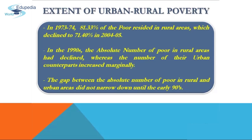Regarding the extent of urban and rural poverty: in 1973-74, 81.33 percent of the poor resided in rural areas, which declined to 71.40 percent in 2004-05. This means three-fourths of the poor in India still reside in villages. Poverty, which was prevailing predominantly in rural areas, has also shifted to urban areas in the 1990s.